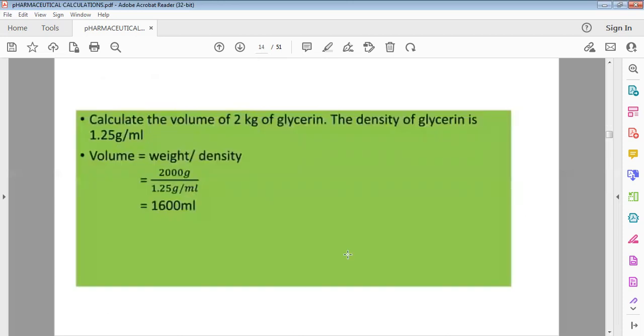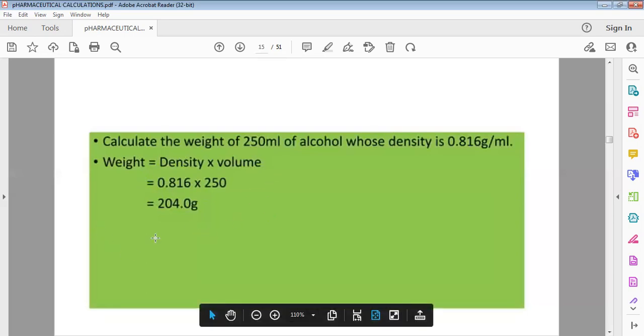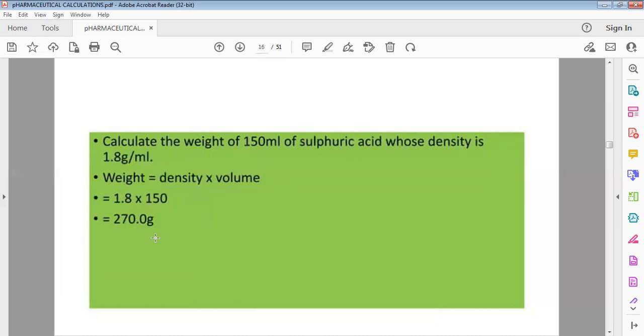For example, 2 kg of glycerin volume, density of glycerin is 1.25. Density is equal to weight by volume. Another example: 250 ml of alcohol weight, calculate using the same formula.